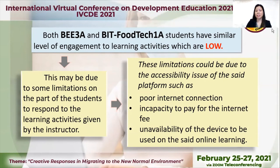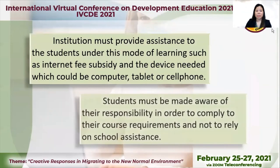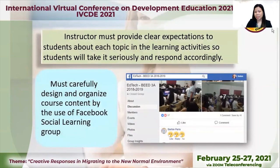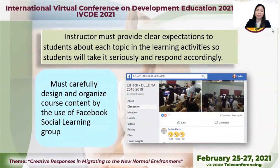Those are some things we must consider in implementing the online platform. The institution must provide assistance to students under this mode of learning, such as internet fee and the device needed — which could be a computer, tablet, or cell phone. Students must be made aware of their responsibility in order to comply with their course requirements and not to rely on school assistance. The instructor must provide clear expectations to students about each topic in the learning activities, so students will take it seriously and respond accordingly. The instructor must also carefully design and organize course content using the Facebook social learning platform.